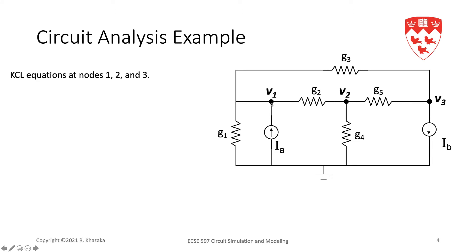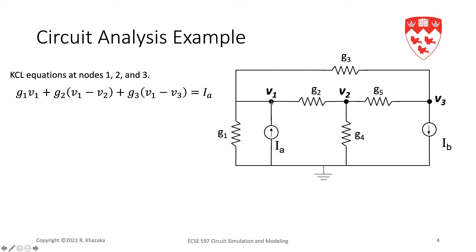At node 1, we're summing the currents leaving the node. The current leaving node 1 through G1 is G1·V1; the current leaving through G2 is G2·(V1 − V2); the current leaving through G3 is G3·(V1 − V3). On the right-hand side, we sum currents entering the node through independent sources — in this case we have IA, so we have IA on the right-hand side.